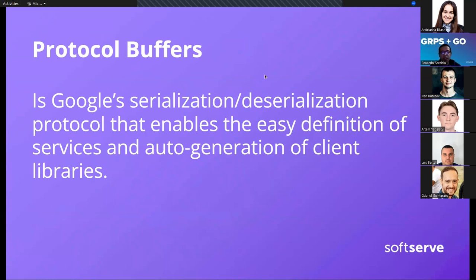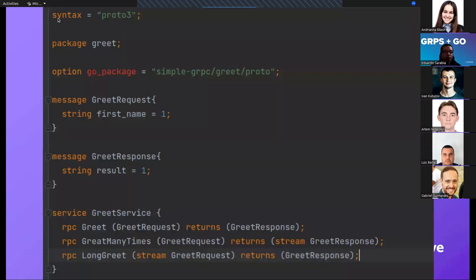Another important technology used by gRPC is Protocol Buffers — a Google serialization protocol that enables easy definition of services and auto-generation of client libraries. For this we need a protocol compiler, or protoc. We need to define a proto file, and from the message and service definitions in that file, the code for our clients and servers will be auto-generated. I'm going to show you an example of a simple proto file.